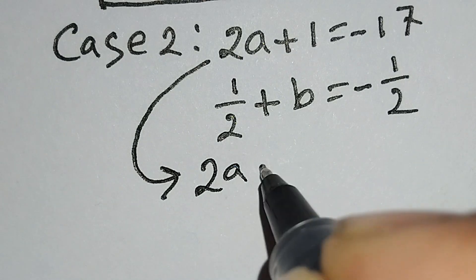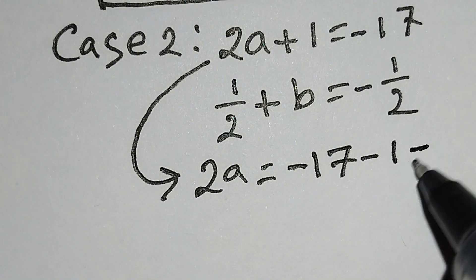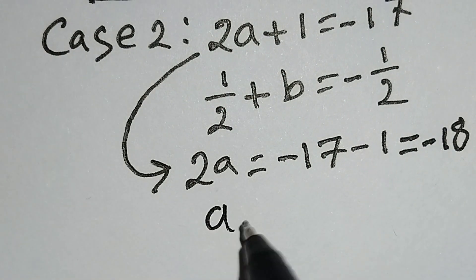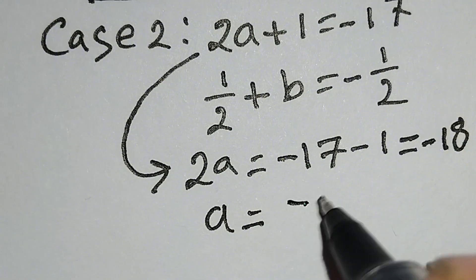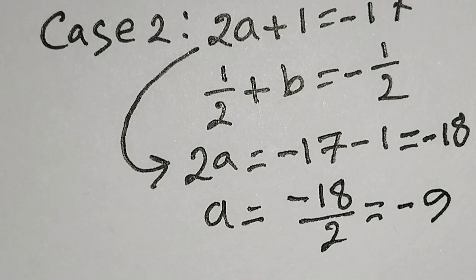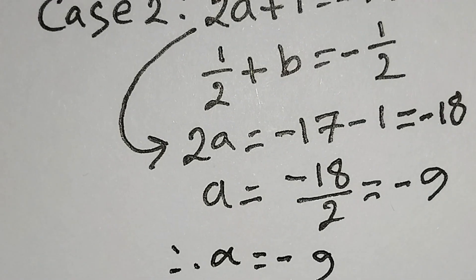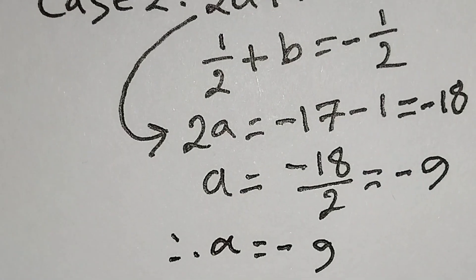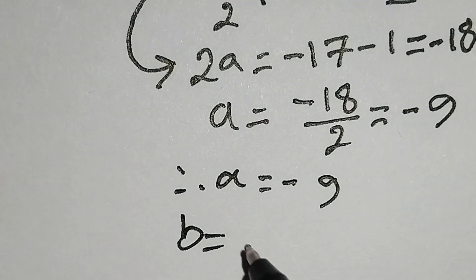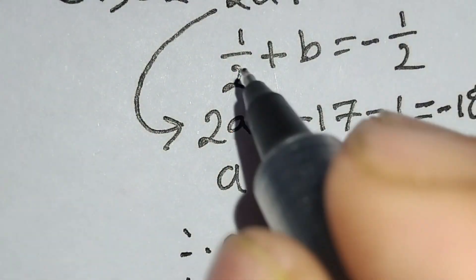From here, 2a = −17 − 1 = −18, therefore a = −18/2 = −9. Therefore a = −9, and from here b = −1/2 − 1/2.